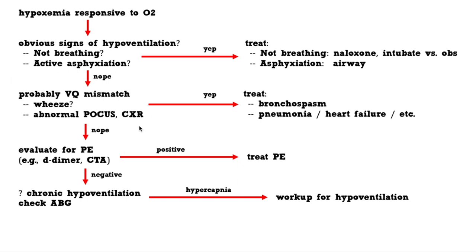Moving on, most of these patients are going to have VQ mismatch — this is where you do your basic pulmonary workup. Listen to them, do an ultrasound. Perhaps they have bronchospasm, asthma, COPD, pneumonia, heart failure — this is the bread and butter evaluation for hypoxemia. If that is negative, this is when you need to think about pulmonary embolism: pull out your D-dimer, CT angiography, and perhaps diagnose a PE or find some subtle lung pathology you missed previously.